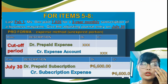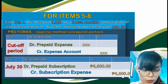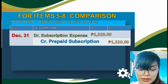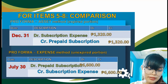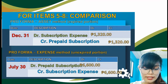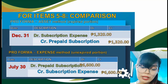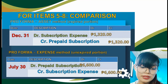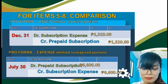The P6,600 represents the amount not yet used as of the cut-off date. To compare: asset method has debit subscription expense and credit prepaid subscription of P1,320; expense method has debit prepaid subscription and credit subscription expense of P6,600. Adding P1,320 and P6,600 gives the total payment of P7,920.